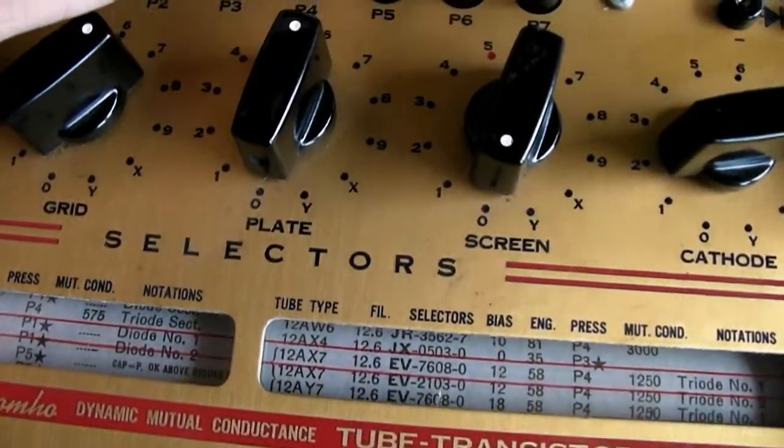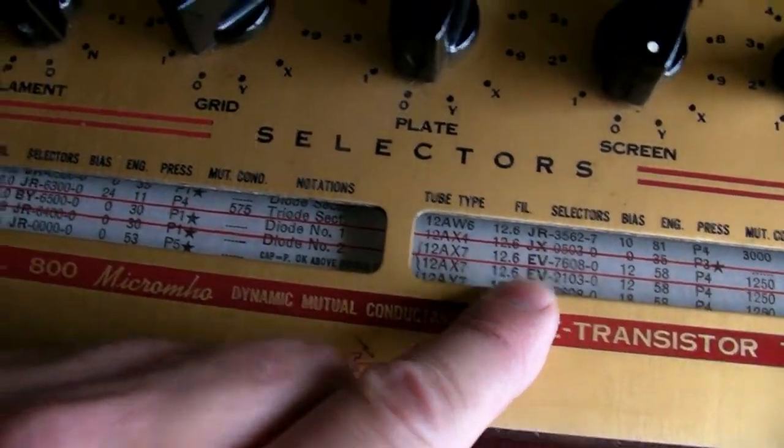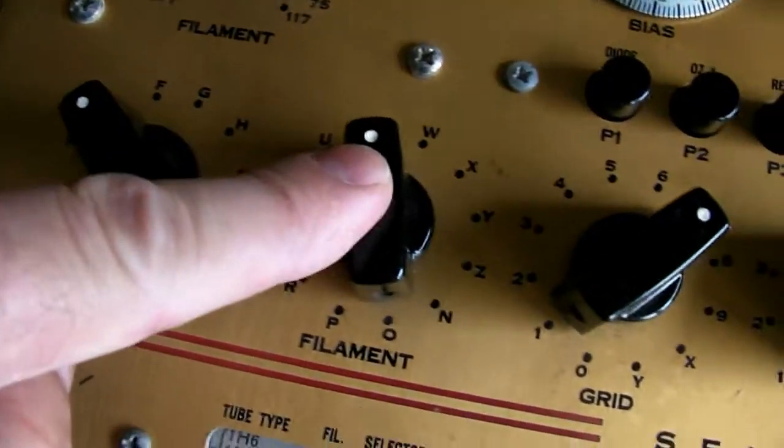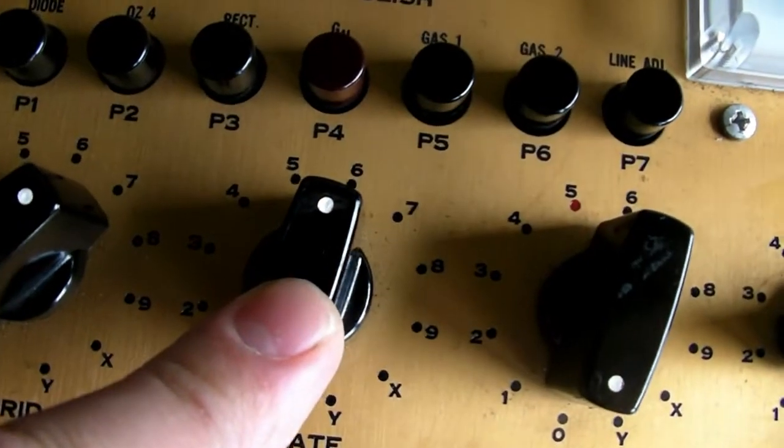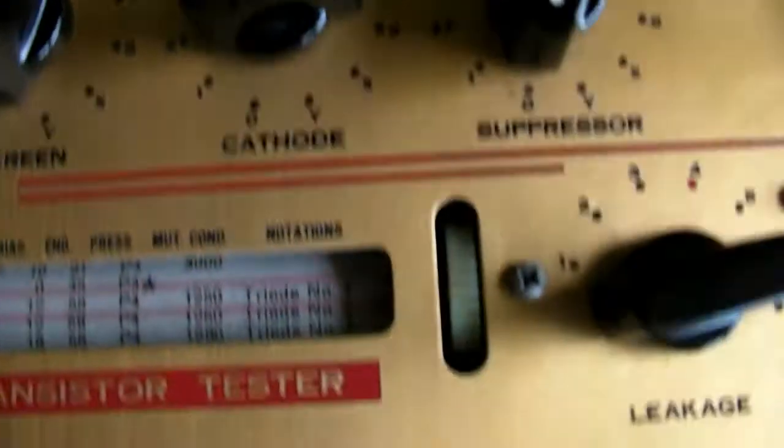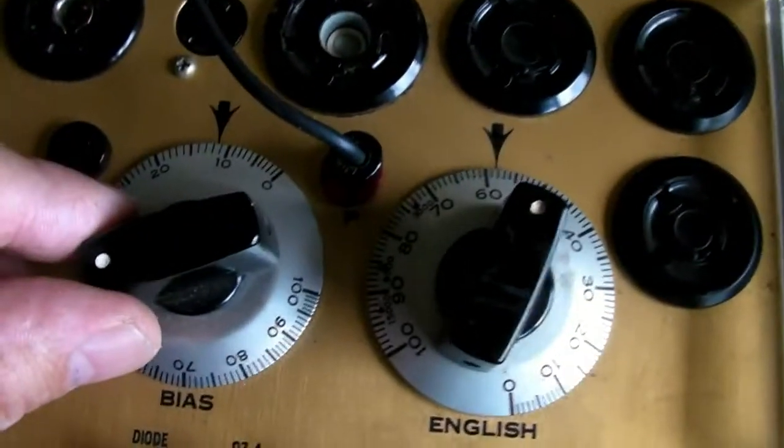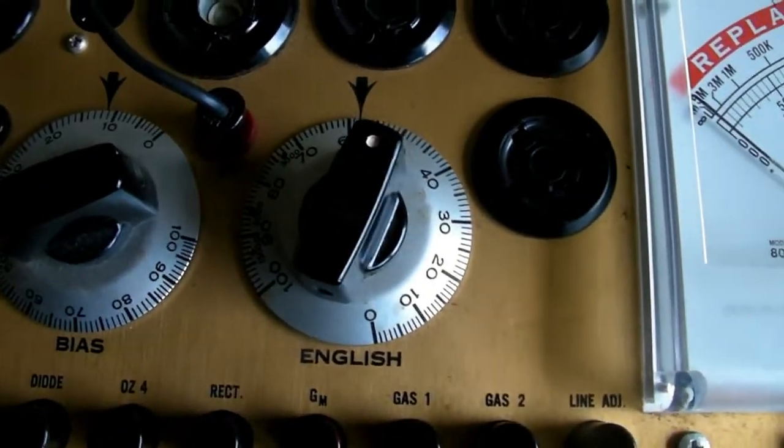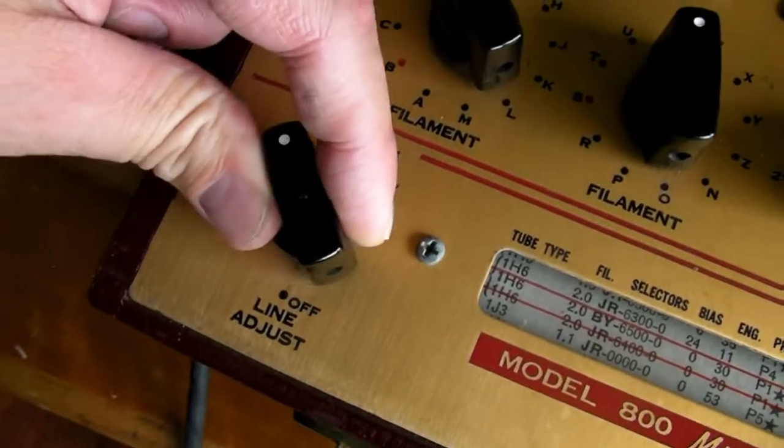Let's see, I'm going to make sure all my settings are correct. So we've got 12.6 volts. And then we go EV, so we've got EV76080. That one's on 8 and then dash 0. Bias is going to be on 12, it's already there. And the English is going to be on 58, which I have set already. So what I'm going to do is I'm going to turn the meter on.